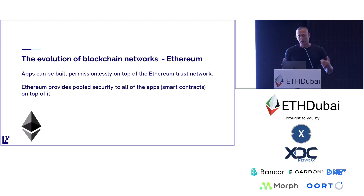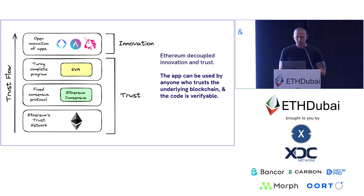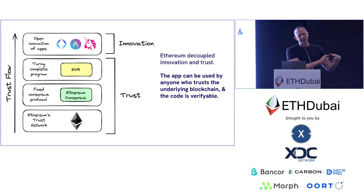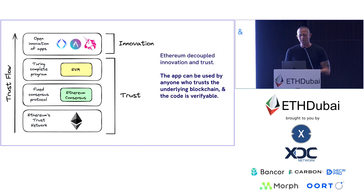Now we have all these other blockchain networks that are smart contract networks, either copying what Ethereum did or thinking of new ways to do it — all these other L1s, execution environments, etc. The general idea was this: it decoupled innovation and trust. You could have innovation built by an individual person quickly and easily, with a lot of experimentation, without having to build all that infrastructure from scratch — it was a game changer in terms of how quickly people could build.